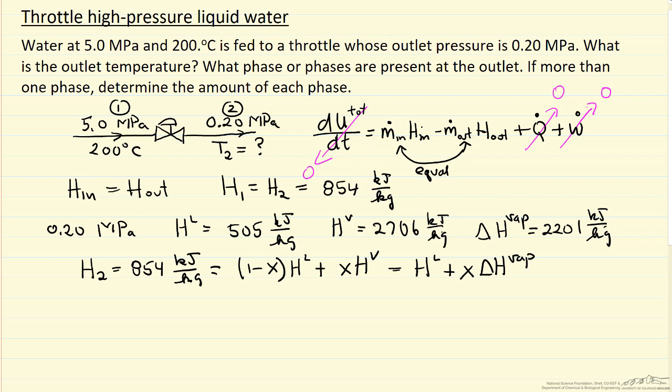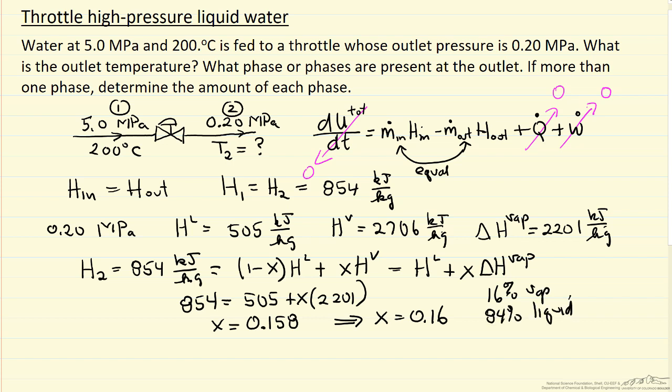And so I'll substitute the numbers in and I did the calculation to solve for x to two significant figures, 0.16 so this says the exit is 16% vapor and 84% liquid. And then the temperature is the saturation temperature which in this case is 120 degrees C at 0.2 megapascals pressure.